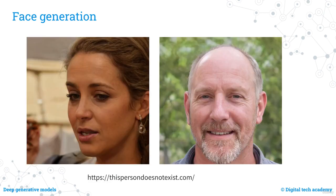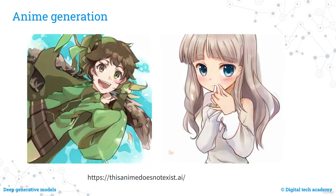Let's look at some examples of images generated by generative models. In this slide, it is possible to see absolutely realistic photographs of two people as if they were taken by a camera. In reality, these images were completely generated by an artificial intelligence algorithm — as the URL present in this image says, these people do not exist. Another slide shows drawings that look like those created by an expert draftsman, but were created entirely by a generative model.